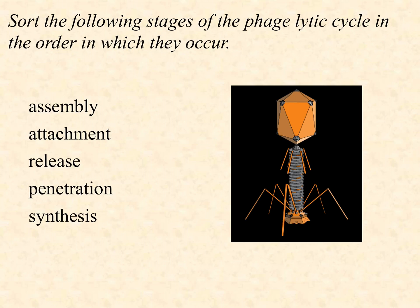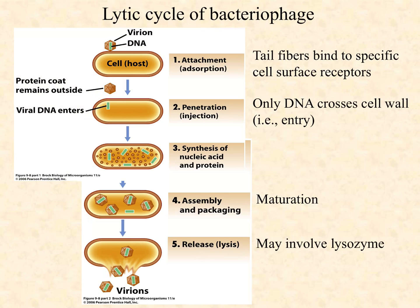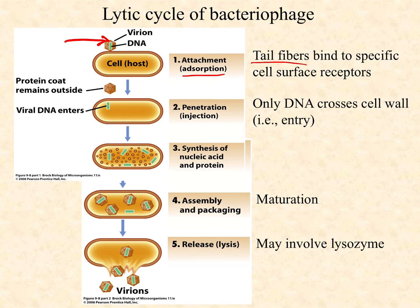The five steps are assembly, attachment, release, penetration, and synthesis. Here's the lytic cycle of bacteriophage. Here's our little virus particle — also called a virion — with its DNA. Remember, the vast majority of bacteriophages have double-stranded DNA. We have to start with attachment. Some textbooks and standardized tests might call this adsorption — all you need to know is that adsorption means sticking to a surface, so attachment and adsorption mean the same thing.